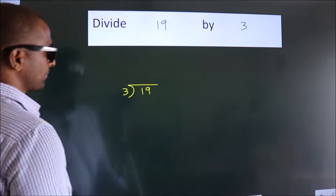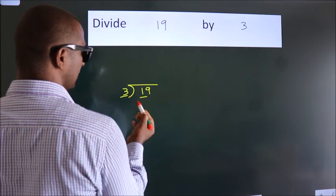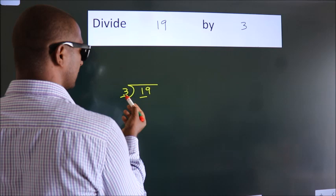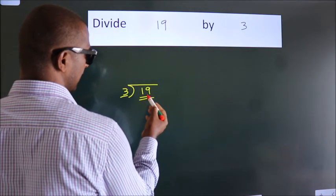Next. Here we have 1, here 3. 1 smaller than 3. So we should take 2 numbers, 19.